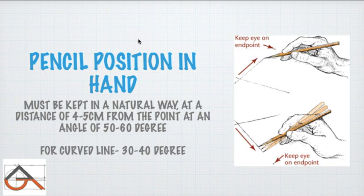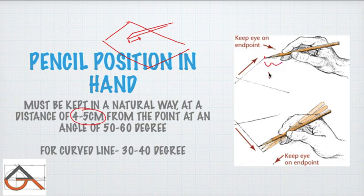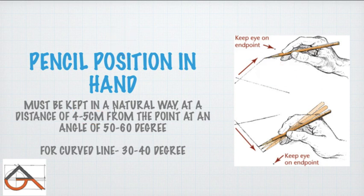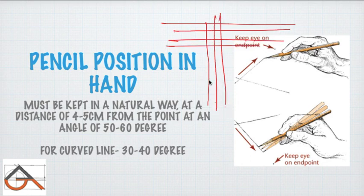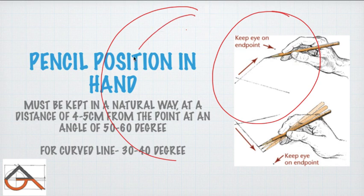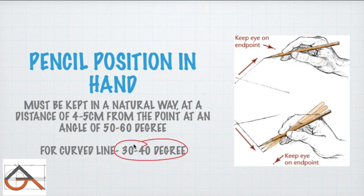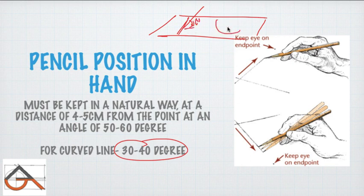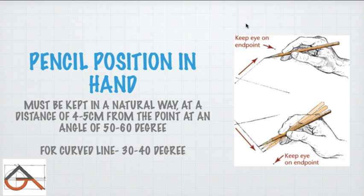Next is pencil position in the hand. The easiest way: when holding the pencil on paper, the distance from the tip of the pencil to your fingers should be around four to five centimetres — this can vary by person. For straight lines (vertical or horizontal), hold the pencil at 50 to 60 degrees. For curved lines, the pencil should be more slanted — around 30 to 40 degrees.